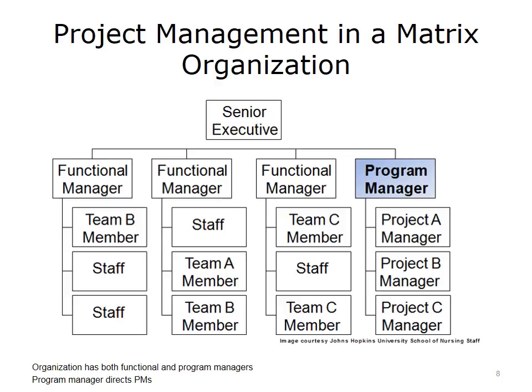A second way of organizing is in a matrix fashion. This organization has not only functional managers, but also a program manager to oversee projects. As a project manager, you may report to a program manager who has a number of projects under his or her authority. It's important to appreciate the allegiances that team members have to their functional manager and to you as the project manager. In a matrix organization, this arrangement is more common because there are many projects ongoing at any one time, and the collection of projects has visibility at higher levels. This kind of matrix operation needs to be well understood to appreciate the multiple loyalties of team members and the separate line of reporting through the program manager to senior executives.